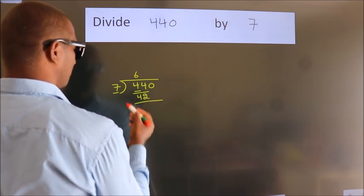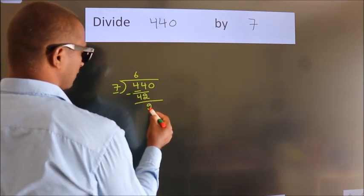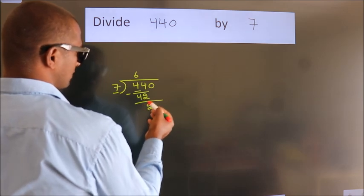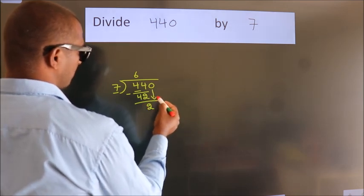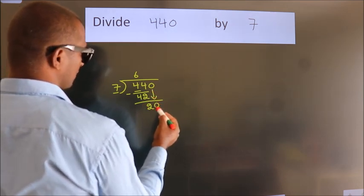Now we should subtract. We get 2. After this, bring down the beside number. So 0 down, giving us 20.